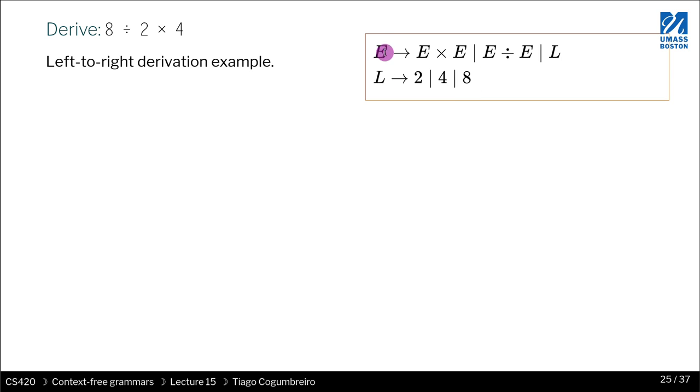The first one is saying if you have an expression, E produces E times E. Another way is an expression is either a multiplication, a division, or a literal. So E produces E times E, or E produces E divided by E, or E produces a literal. And the literal here we just chose two, four, and eight.